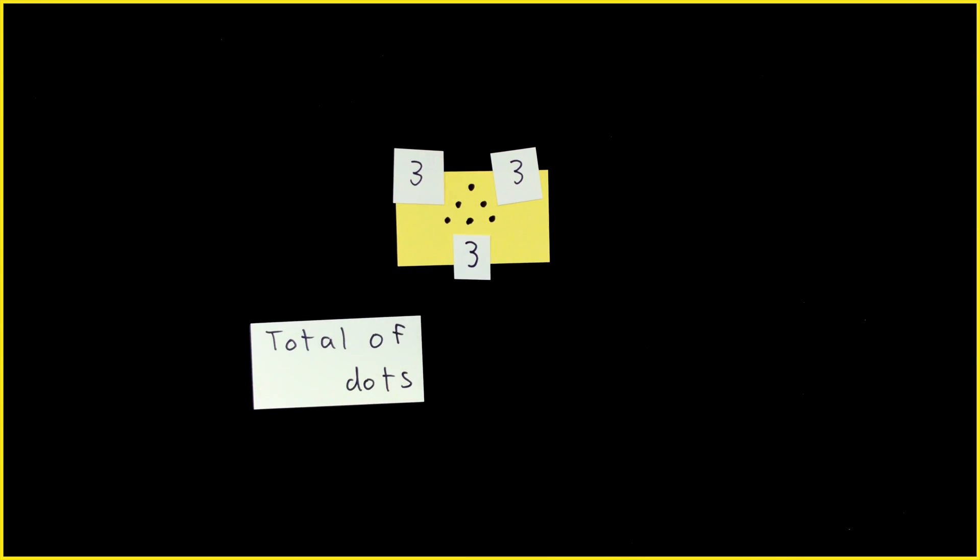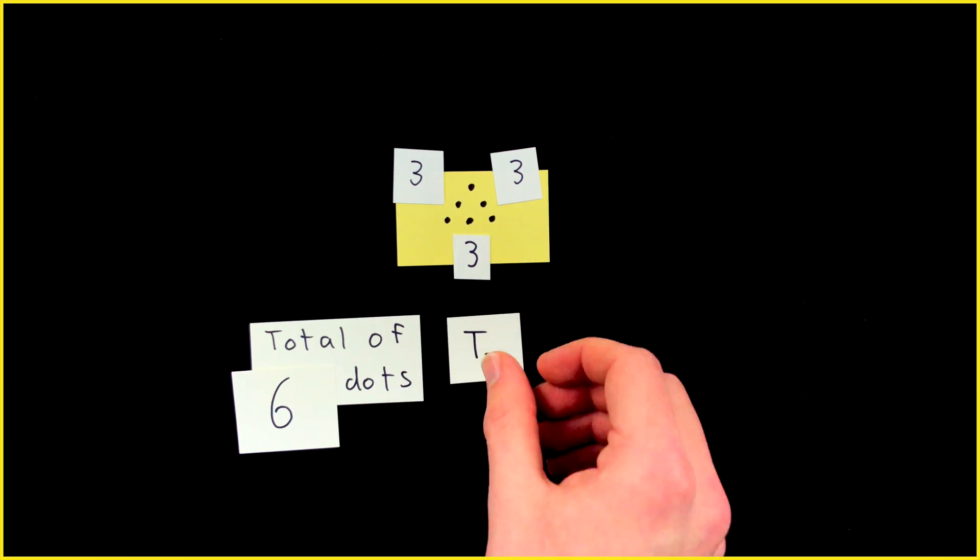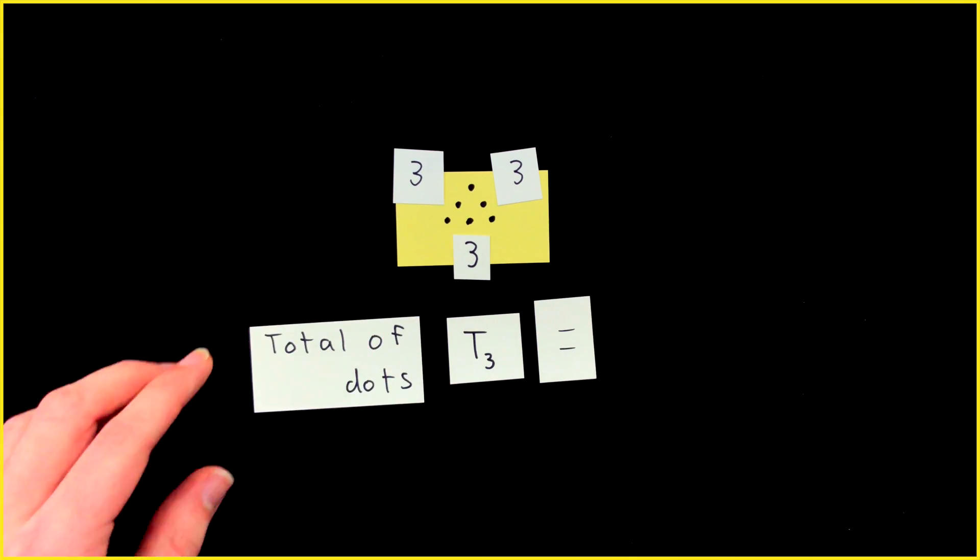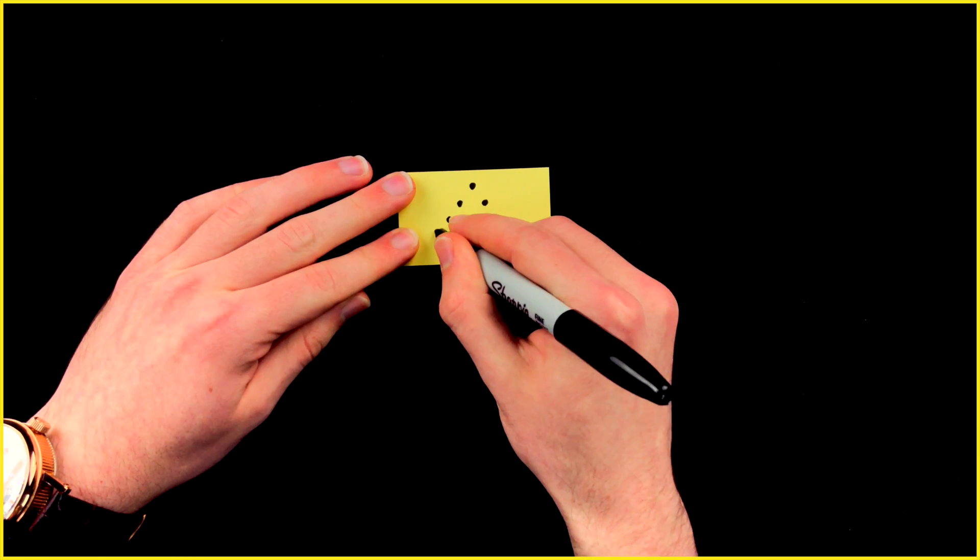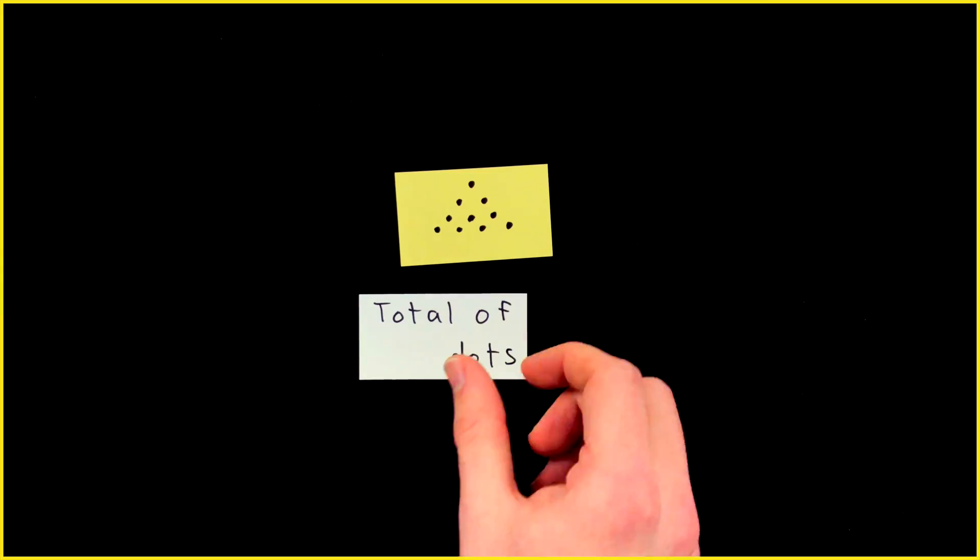To get T3, we added three more dots, for a total of six dots to make this triangle with sides of length three. So T3 is six, the third triangular number. We could repeat the same process to see that 10 is T4.